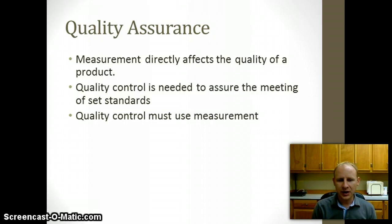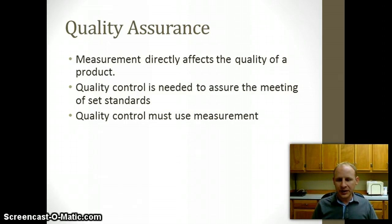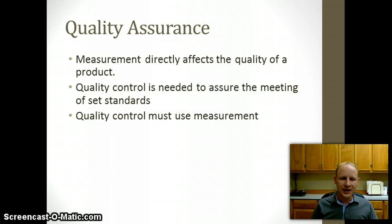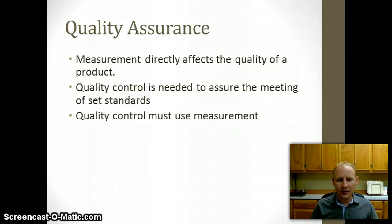Quality control is needed to assure that we have met the standards and that when we produce a product it meets the standards that are out there, and quality control uses measurement. For example, if I tell a customer I'm going to build a garage for them and I tell them it's going to be 24 feet long, but I end up making it 18 feet long, they're going to be upset — that would be poor quality, meaning I failed to use measurements properly and use the standards of measurement to ensure the proper size. If you continue to do that, your business is going to struggle — word is going to get out that you don't meet the standard. So it's incredibly important, no matter what industry you're in, to have quality assurance in place, using dimension, quantity, and capacity to identify how well you've met that standard.